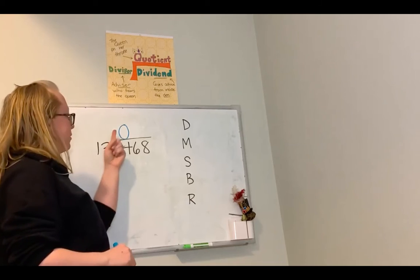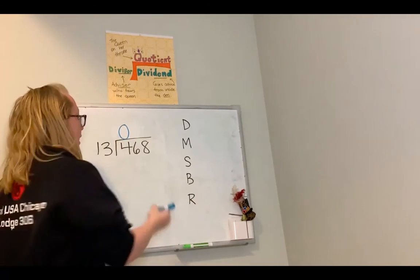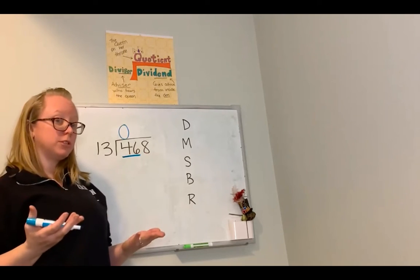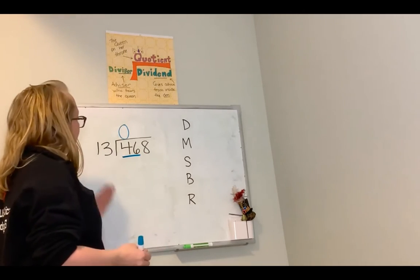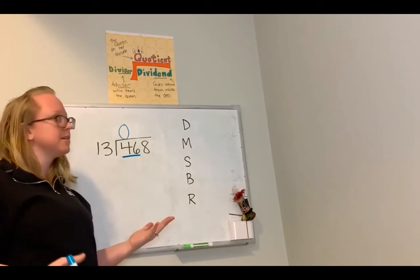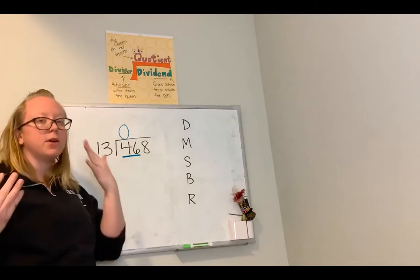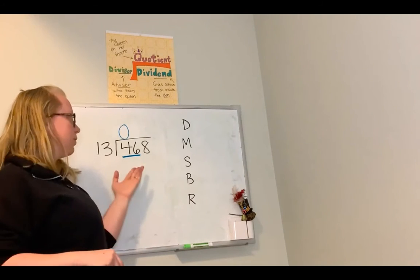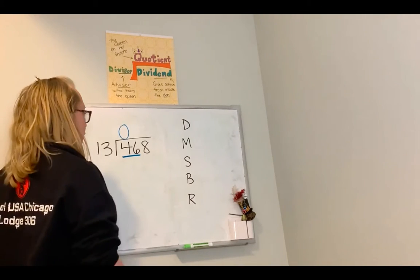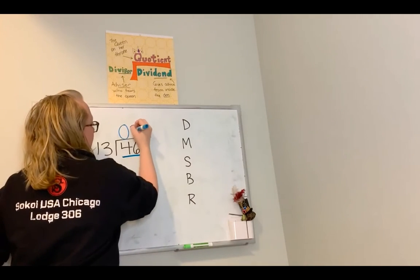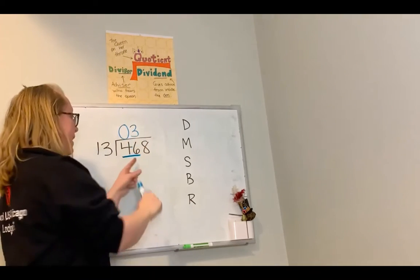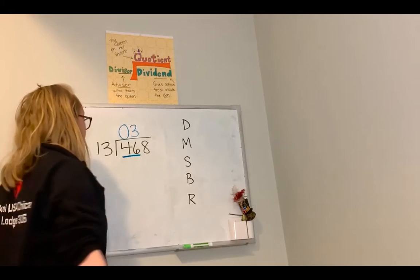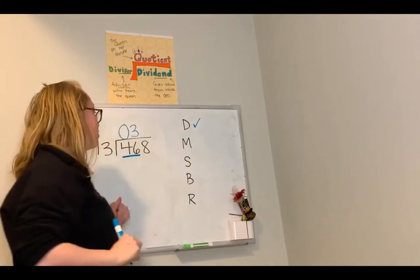Since I have a zero above the 4, I have to look at the first two numbers in my dividend: 4 and 6, which is 46. Can 13 go into 46? Yes — 46 is bigger than 13, so 13 can go into it at least one time. I know 13 goes into 46 three times, so for my division step I put a 3 above the 6. It's so important that this number goes above this number. I can check off the division step.